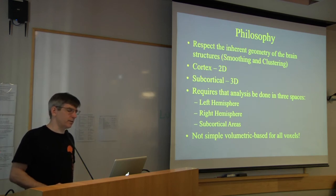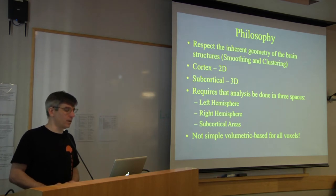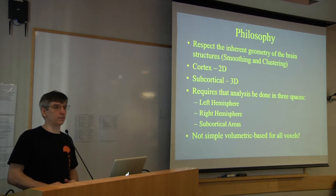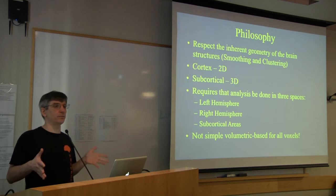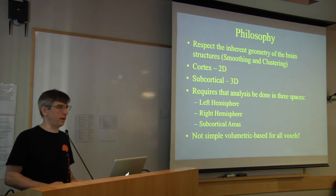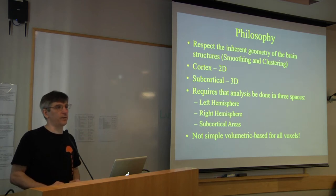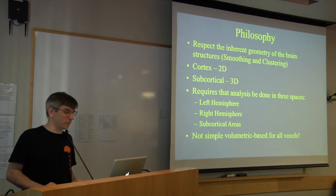FSFAST respects the inherent geometry of the brain. Smoothing and clustering are done either on the surface for cortex or in volume for subcortical structures. This requires analysis in three different spaces: left hemisphere, right hemisphere, and subcortical space. Basically you're going to end up doing everything three times, one for each space.